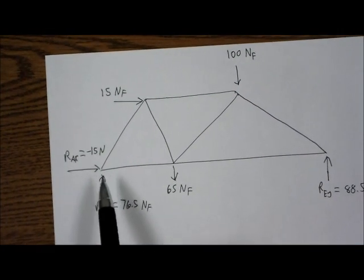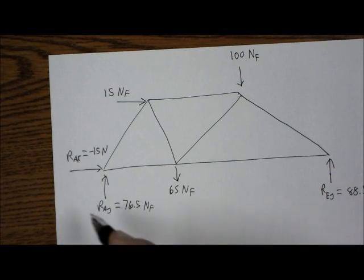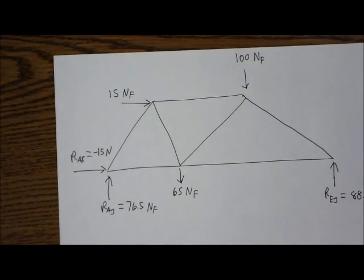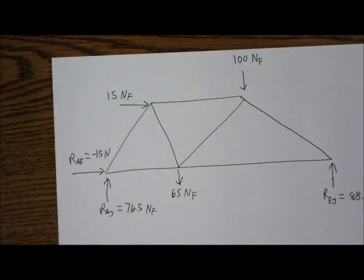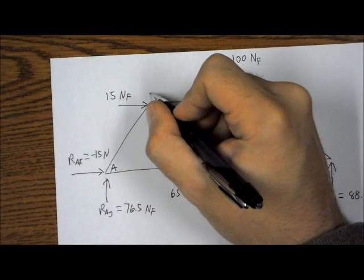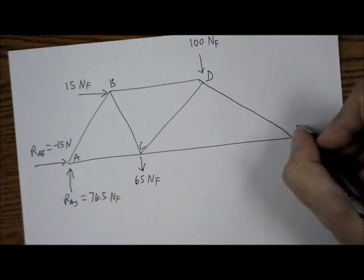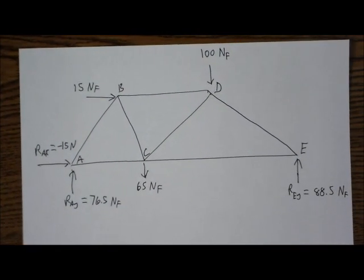At A, we have two reaction forces. RAY, if you look on the previous, we said 76.5. So 76.5 Newtons of force. And over here, RAX was negative 15 Newtons. Now there are many different ways to solve trusses. The way that I'm showing you, I'm going to always keep the arrows in the same direction that I drew them initially.